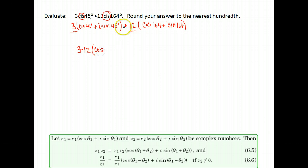Our formula says to multiply the numbers in front. So we have 3 times 12 on the front, cosine of, since we're multiplying we add our angles. So we have 45 degrees plus 164 degrees. And then plus i sine, do the same thing for our angle of sine. We just add the two angles together: 45 degrees plus 164 degrees.